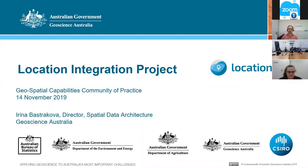This presentation is about the location integration project, or location index, and the number of government organizations like ABS, Department of Environment and Energy, Agriculture, Science Australia, and CSIRO which are doing it. This project is also part of a bigger project, the data integration partnership for Australia. So it's quite a big project.